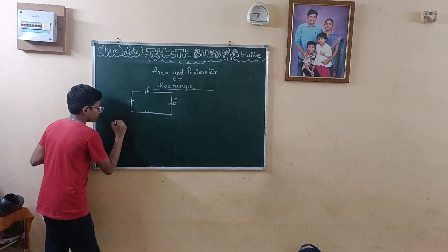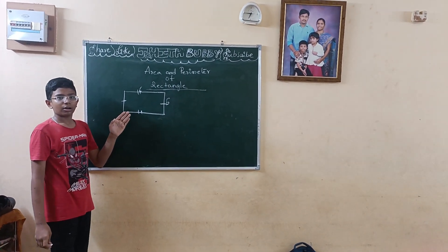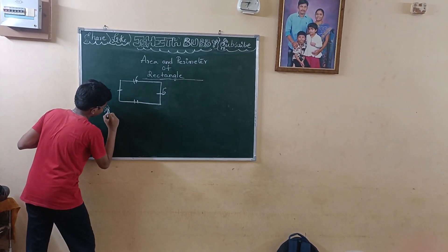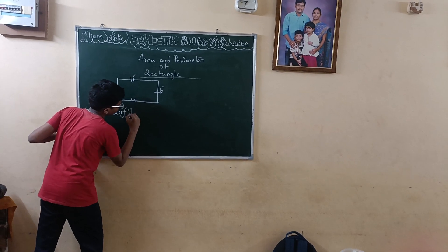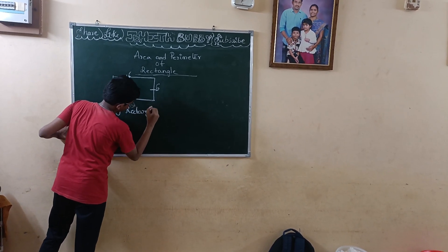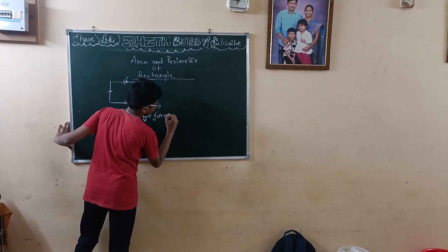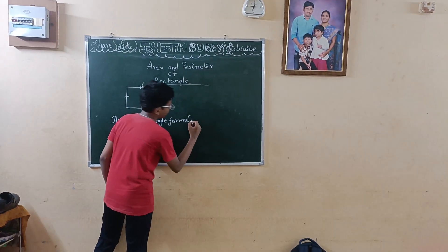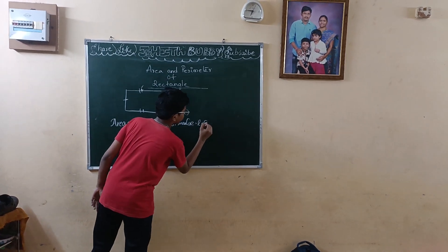Now, what is the formula for the area of a rectangle? The formula is: length into breadth.